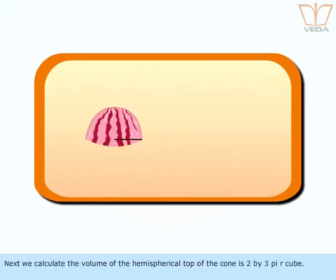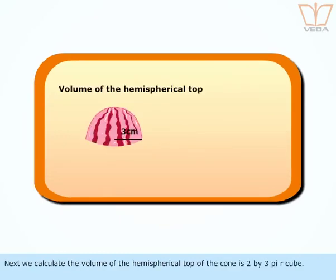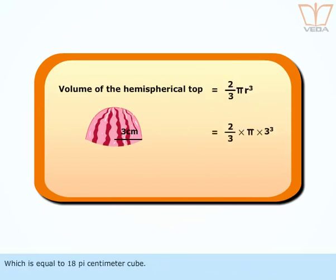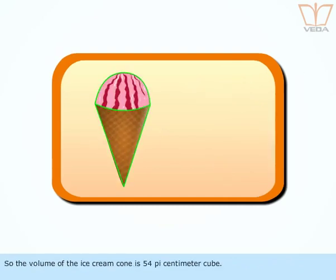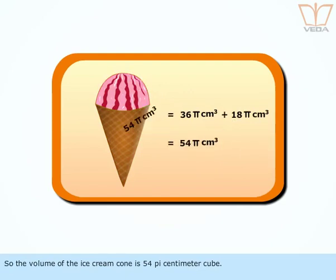Next, we calculate the volume of the hemispherical top of the cone using 2/3 π r³, which is equal to 18π cm³. So, the total volume of the ice cream cone is 54π cm³.